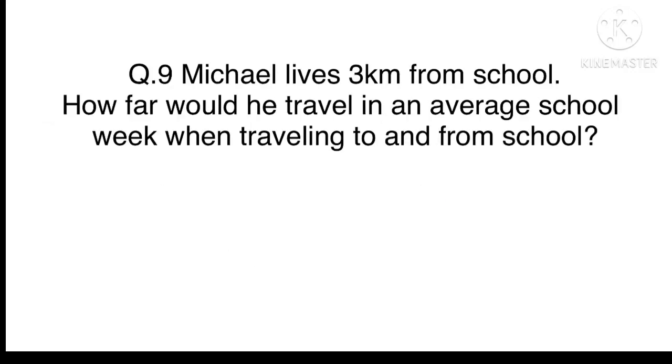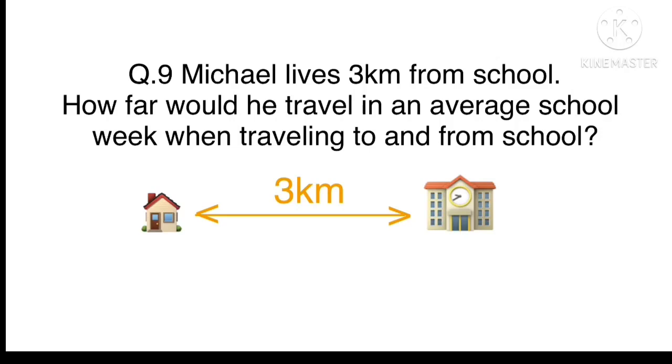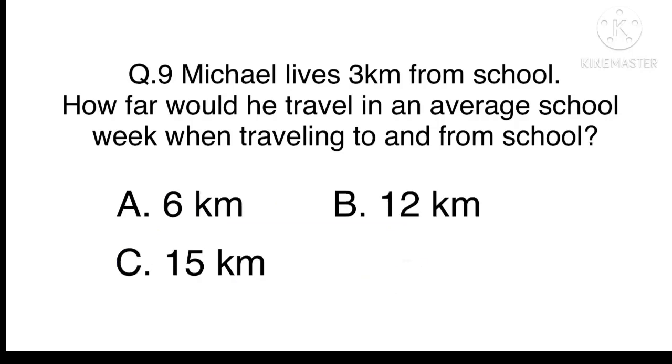Question 9. Michael lives 3 kilometres from school. How far would he travel in an average school week when travelling to and from school? A. 6 kilometres B. 12 kilometres C. 15 kilometres Or D. 30 kilometres. If Michael lives 3 kilometres from school, he has to walk 3 kilometres to school and 3 kilometres back to home. If Michael walks 6 kilometres every day for 5 days, he walks 30 kilometres in an average school week. The answer is D. 30 kilometres